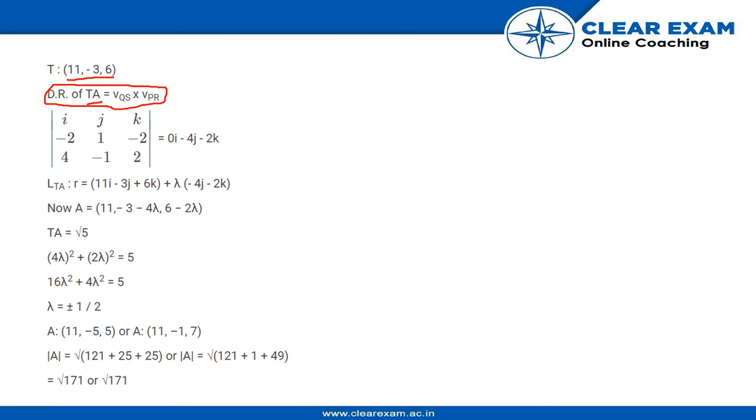So IJK, direction ratios of QS is minus 2, 1 and minus 2. Direction ratios of PR is 4, minus 1 and 2. Thus, we get the direction ratios of the point or the line TA.